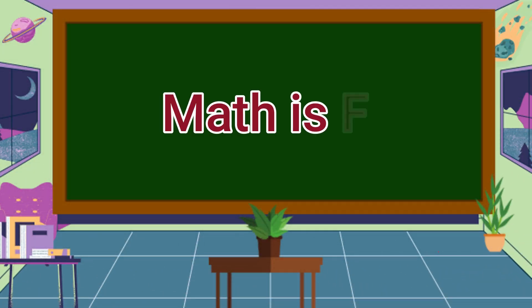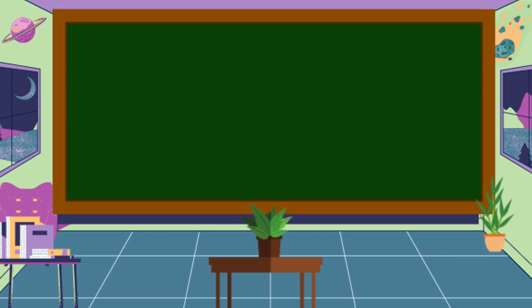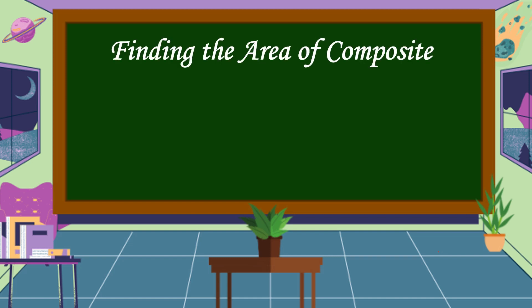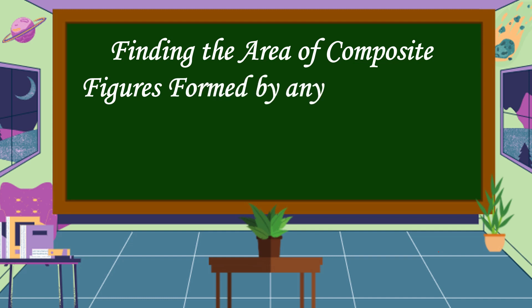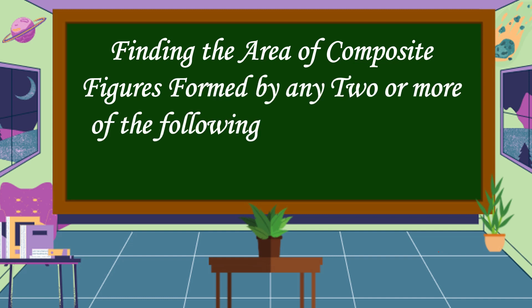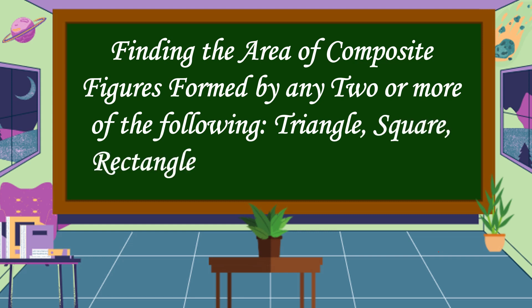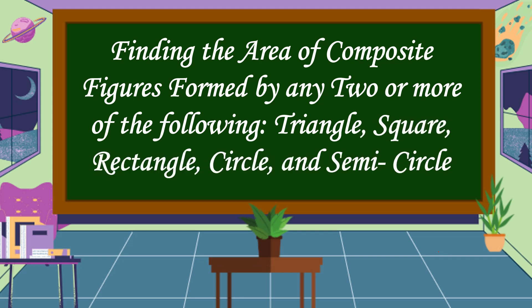Hello everyone, welcome to Math is Fun. Our lesson for today is all about finding the area of composite figures formed by any two or more of the following: triangle, square, rectangle, circle, and semicircle.